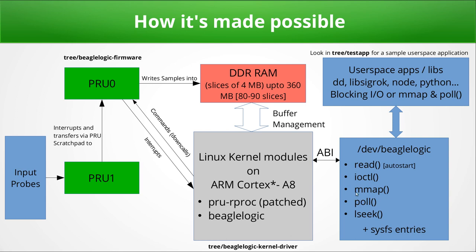The kernel module enables reading out the buffer via either read or mmap, notifying the user space application via poll if it's doing non-blocking IO. The user space application opens /dev/beaglelogic and can do IOCTL calls to configure parameters like the sample rate and whether the capture is one-shot or continuous. There is also a matching sysfs entry for every IOCTL call for convenience, and the poll and lseek functions help the user space application access the entire buffer exposed as one contiguous unit.